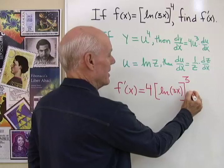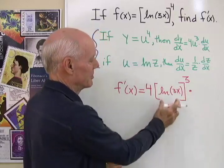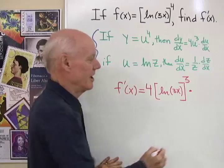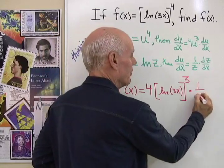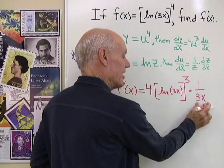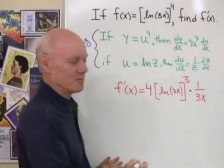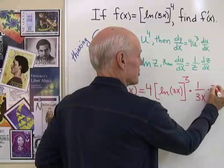Then I differentiate the base, so I'm going to multiply times the derivative of natural log 3x, which is going to be 1 over 3x. And then I differentiate the 3x with respect to x and that's going to be just 3.